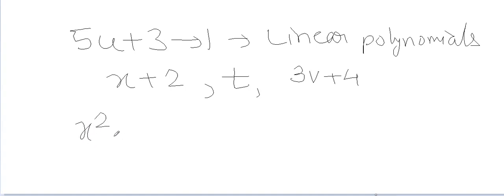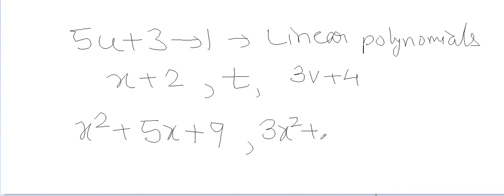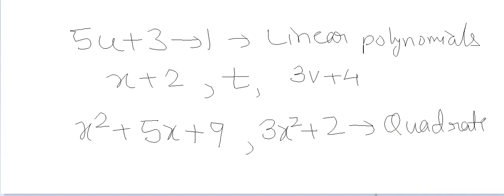Polynomials like x squared plus 5x plus 9 and 3x squared plus 2 both have degree 2 and are called quadratic polynomials. Quadratic polynomials always have degree 2.